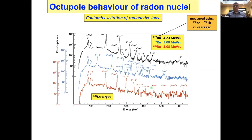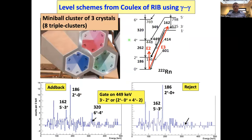Twenty-five years ago we measured the level schemes and rotational properties of radon-222 using a deep inelastic reaction — xenon-136 on thorium-232 — observed the gamma rays in Gammasphere, and constructed the decay scheme. Fortunately, the decay scheme we published is consistent with what we observe here. The other two nuclei, radon-224 and radon-226, were completely unknown prior to this work.